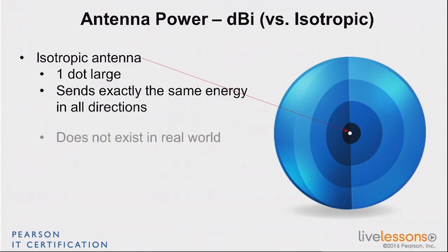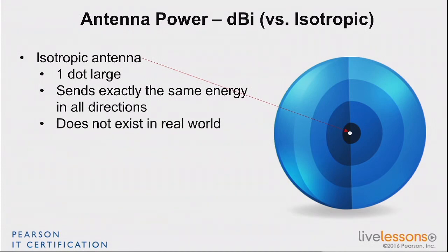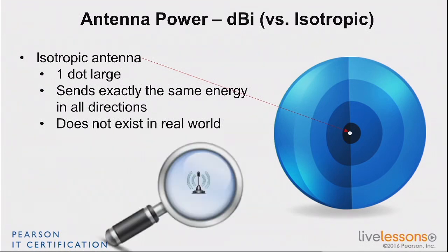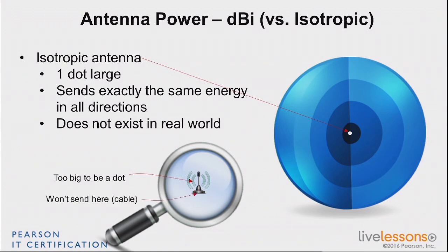Simply because you have to make the antenna out of some material, and you have to bring energy into it. So just by the physical structure of the antenna, there will be some places where you're not radiating the same way as others. You won't send where you receive antenna energy, and you may be sending more in some directions than others, just because of the making of it. So the isotropic antenna doesn't exist.